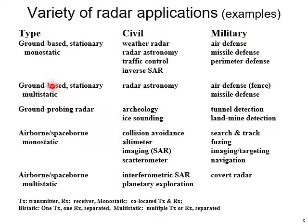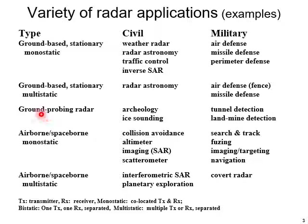For ground-based stationary multi-static radar systems, we have radar astronomy for civil use, and air defense fencing, missile defense, etc. for military use. For ground probing type radar, civil applications include archaeology and ice soundings, while military applications include tunnel detection and landmine detection.